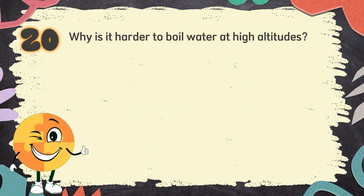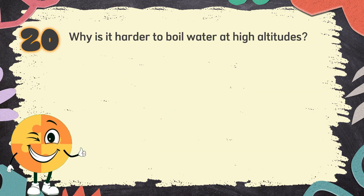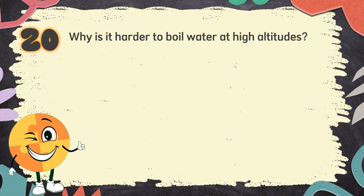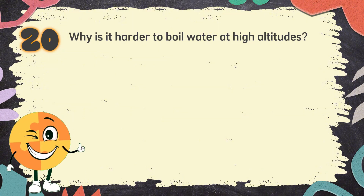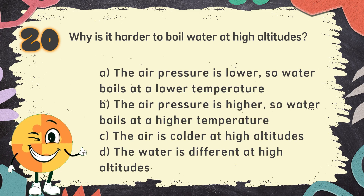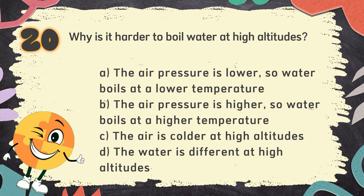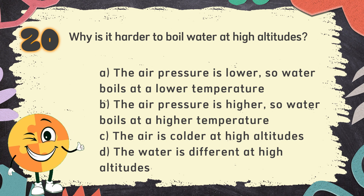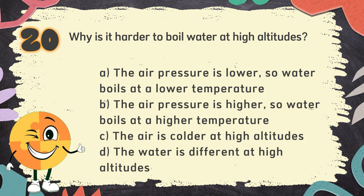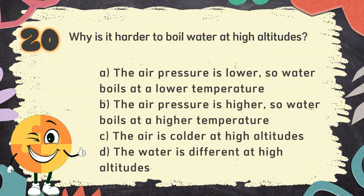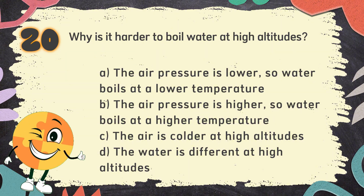Number 20. Why is it harder to boil water at high altitudes? The choices are: A. The air pressure is lower, so water boils at a lower temperature, B. The air pressure is higher, so water boils at a higher temperature, C. The air is colder at high altitudes, D. The water is different at high altitudes.